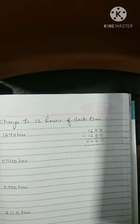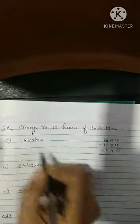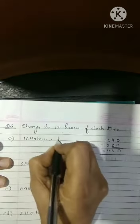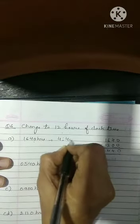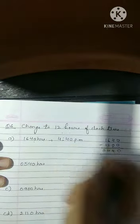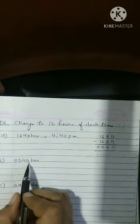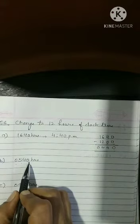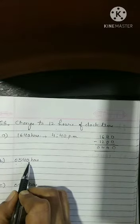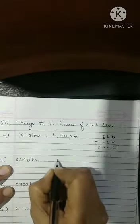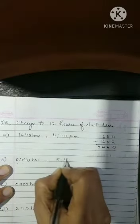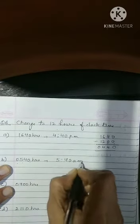So what it means is 4:40. So 4:40 means we are talking about at night 1 hour, then 2 hour, 3 hour, 4 hour, then 5 hour. So 5:40 am.